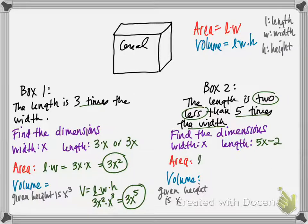So the area is length times width. So that's the length, which is 5x minus 2, putting it in parentheses because it has two terms, times the width, which is x. And I'm going to use distributive property to multiply this. So x times 5x is 5x squared, and x times negative 2 is negative 2x.